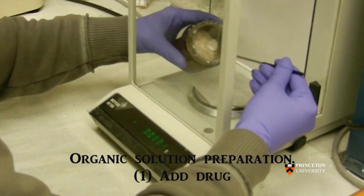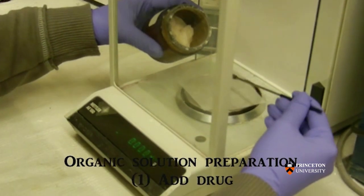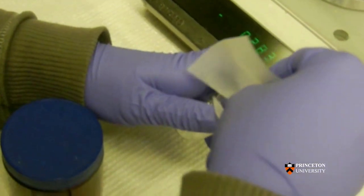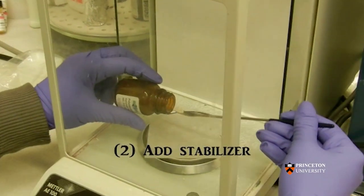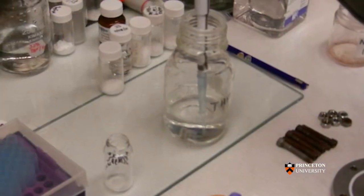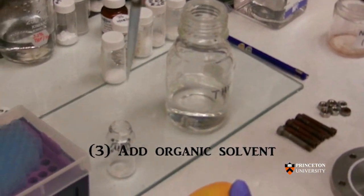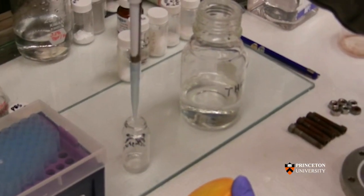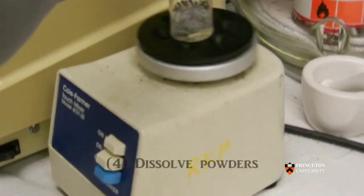The patent describes what we have affectionately now called flash nano precipitation. And it's not just a method, but it's also all the equipment that it takes in order to make the material, make nanoparticles.